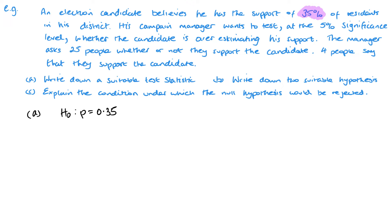I'll make a note of the 5% significance level as it's important. Looking back at the question, we want to know whether he's overestimating his support. If he is overestimating, the actual value will be less than 35%, so our alternative hypothesis is H1: p < 0.35.